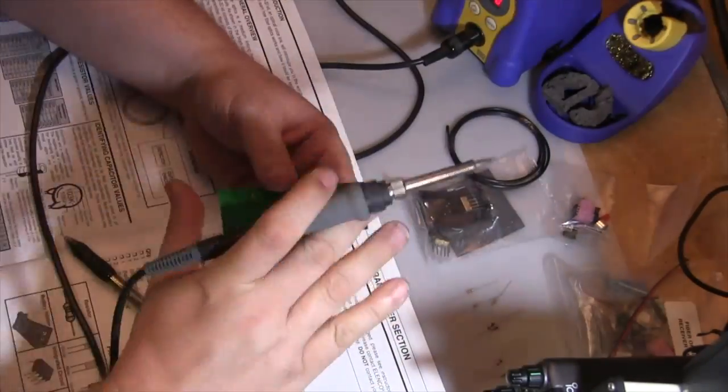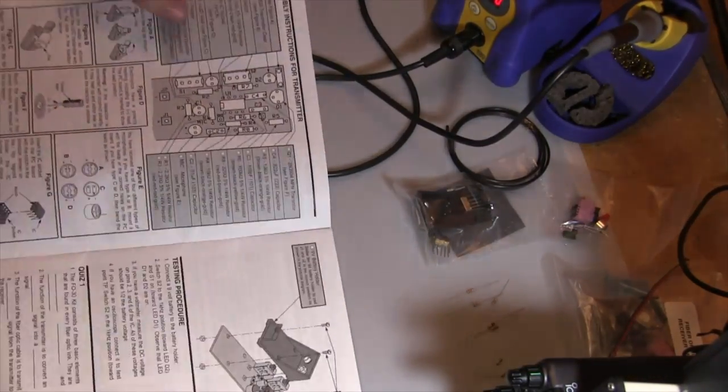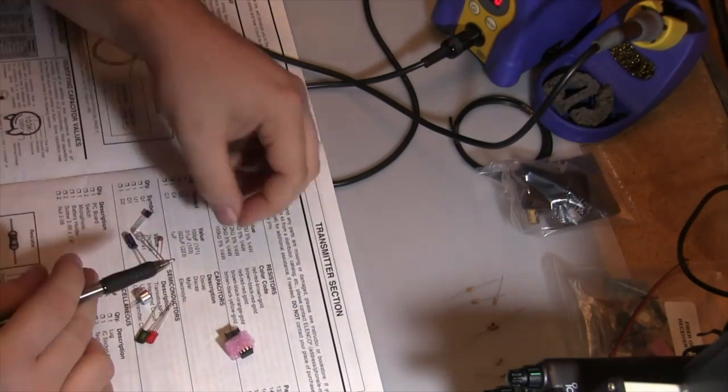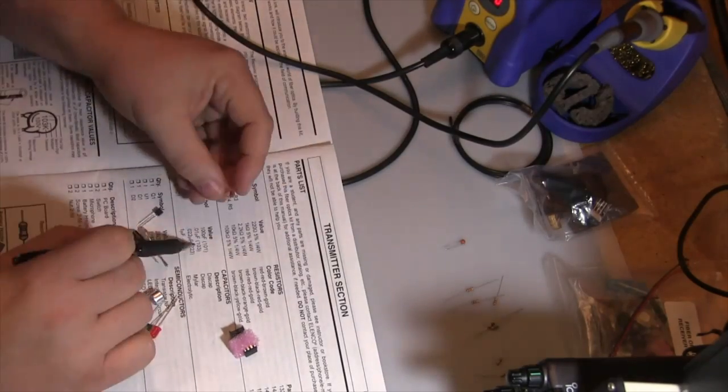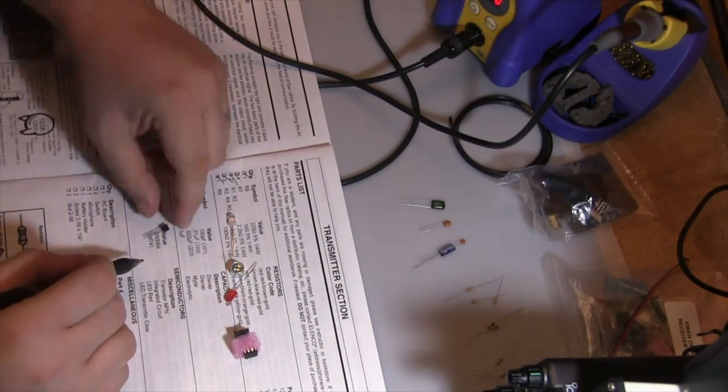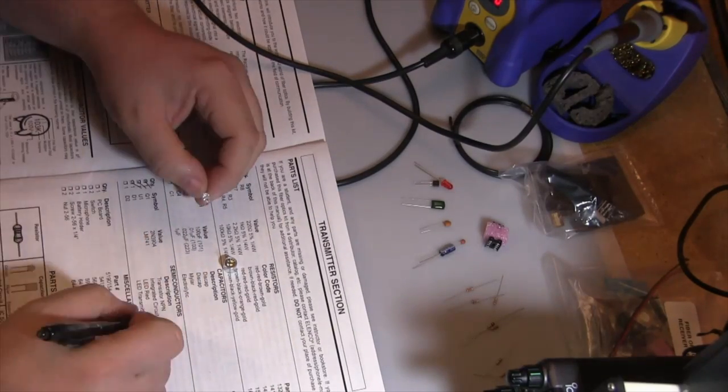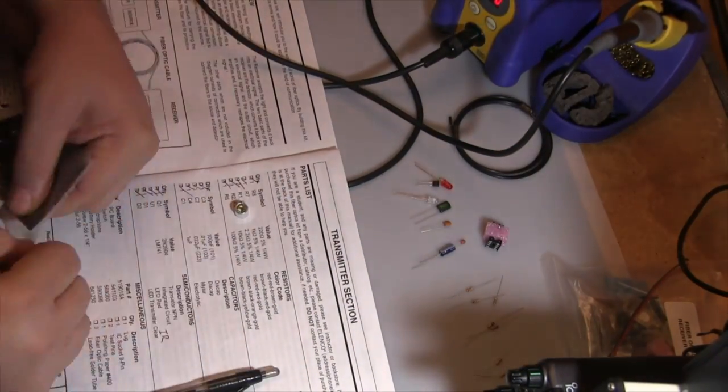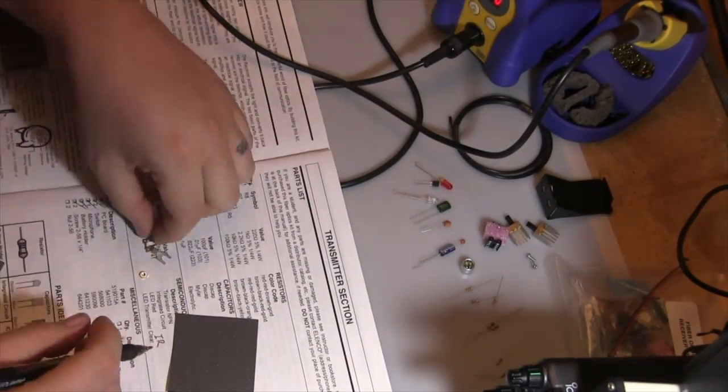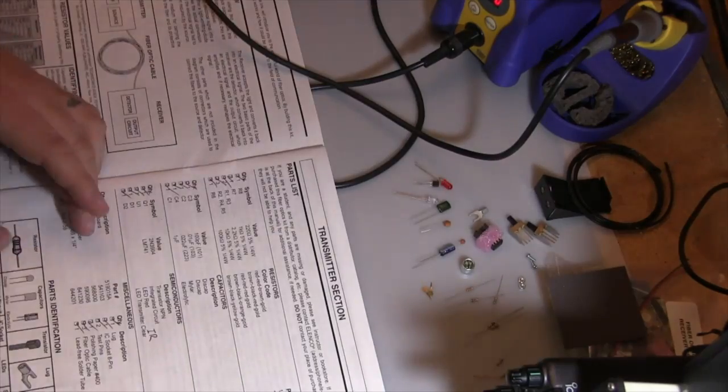The printed circuit board has a silk screen showing where each item goes. I've got the soldering iron hot and the solder wets just fine on the tip. The assembly instructions are pretty good for this. Now we're inventorying the capacitors, transistors, diodes, microphone, IC, and IC socket holder.